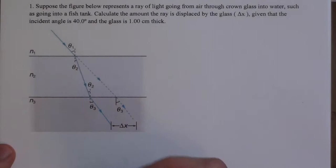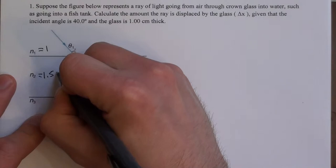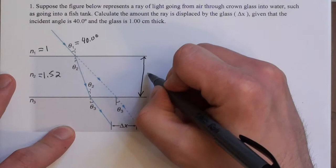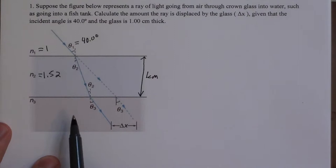Alright, so we can label some of these properties. Air has an index of refraction of 1, crown glass is 1.52, the incident angle is given to us as 40 degrees, and the thickness of this layer is 1 centimeter.